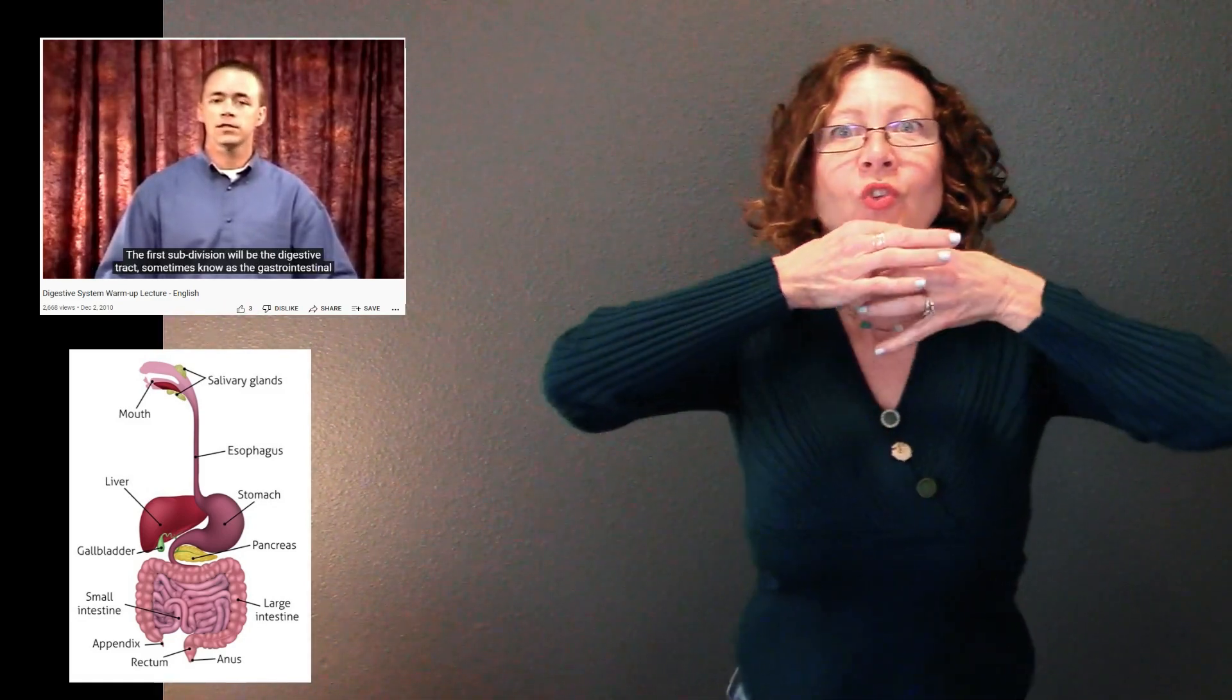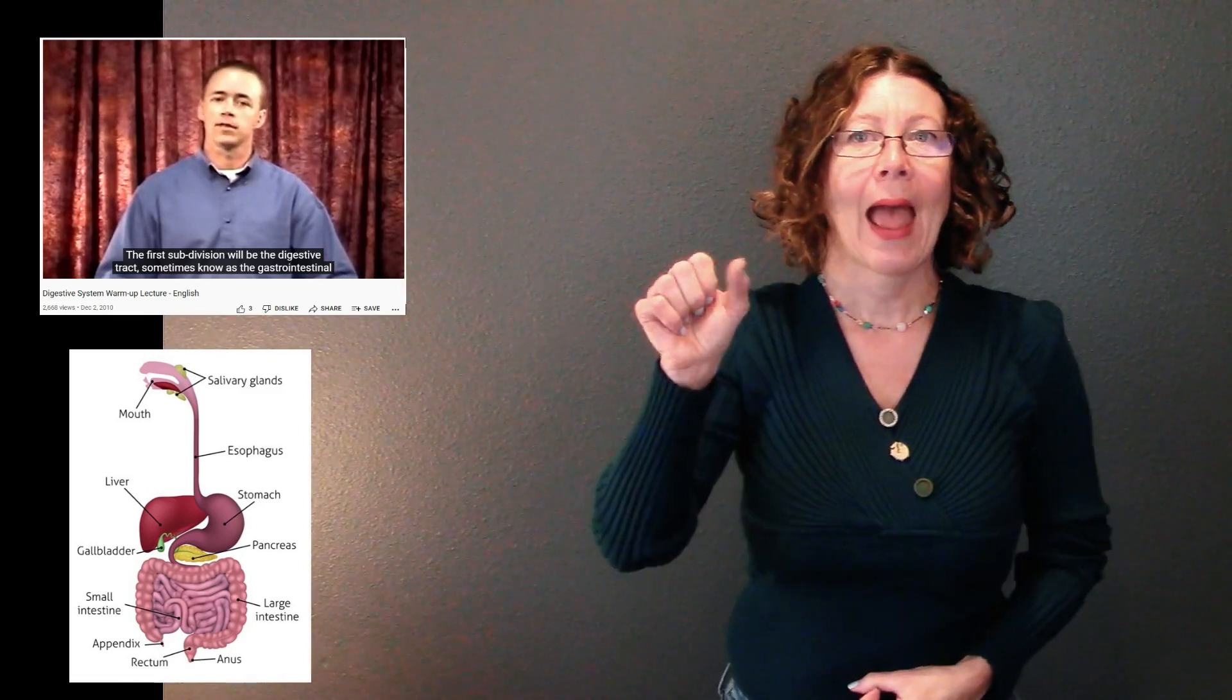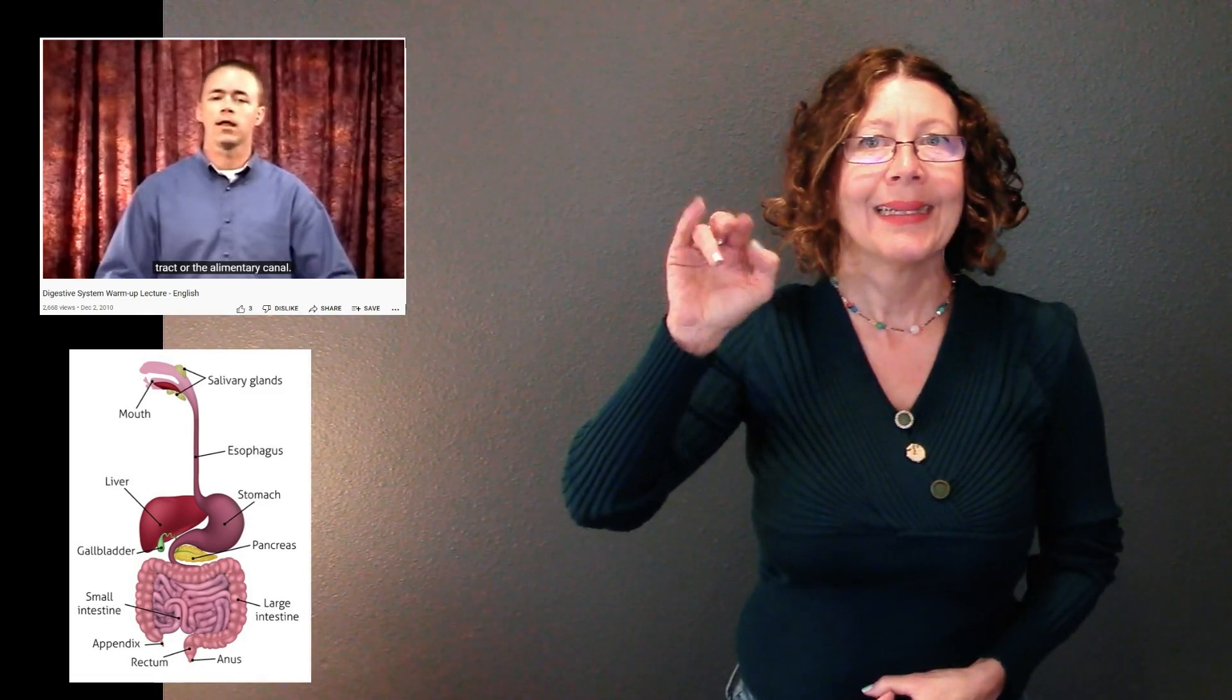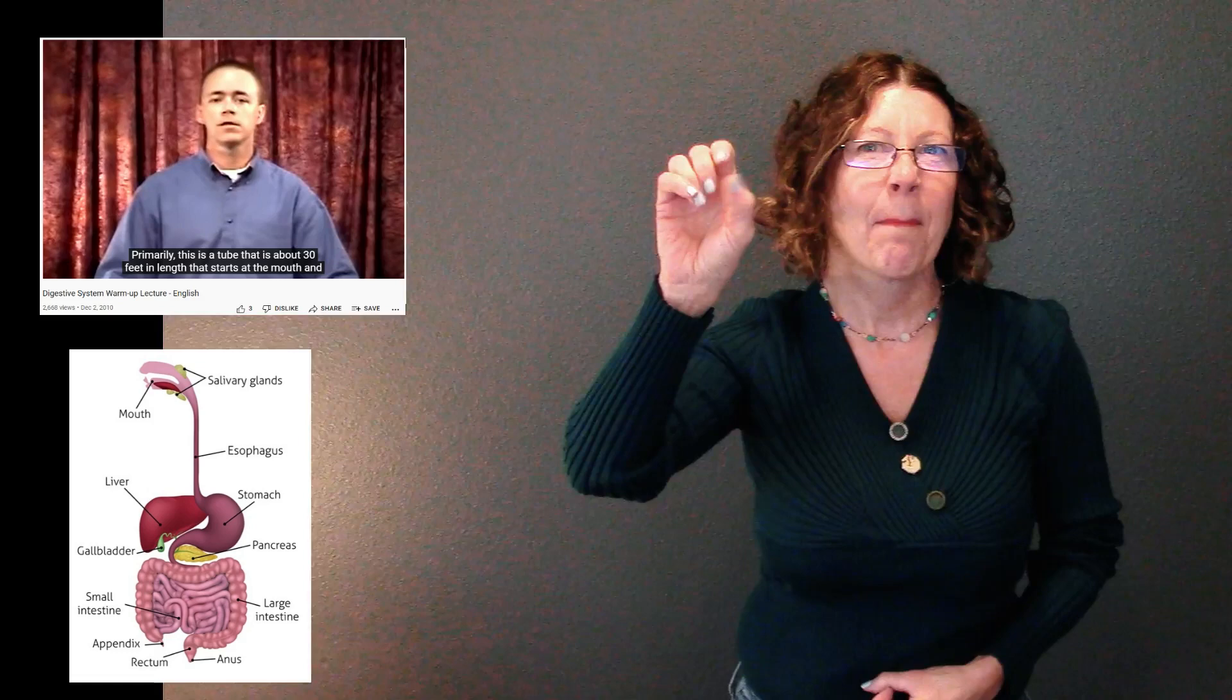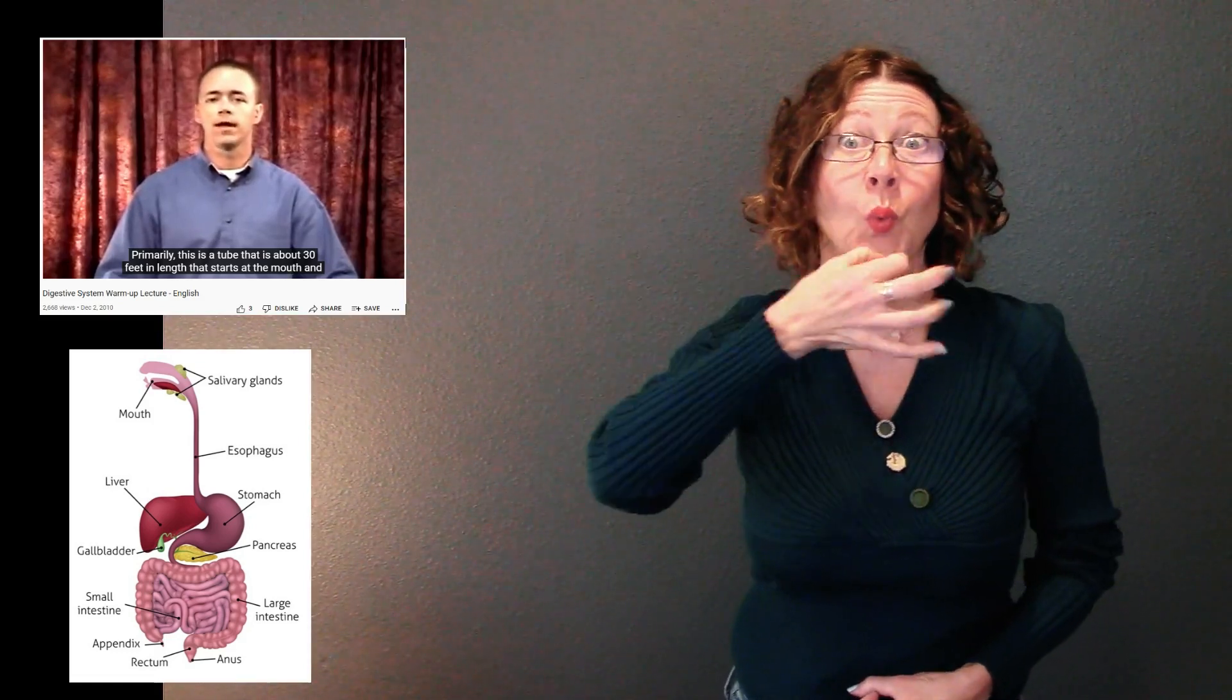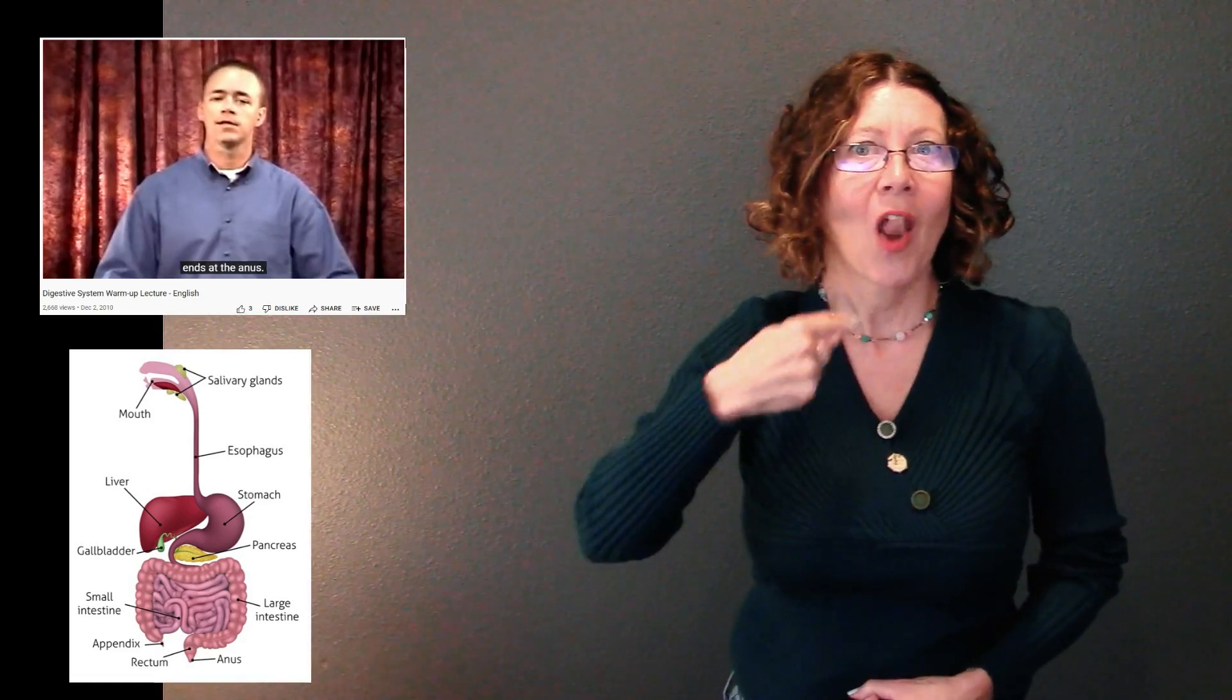The digestive system from an anatomical standpoint is really divided into two subdivisions. The first subdivision is the digestive tract, sometimes known as the gastrointestinal tract or the alimentary canal, and primarily this is a tube that's about 30 feet in length that starts at the mouth and ends at the anus.